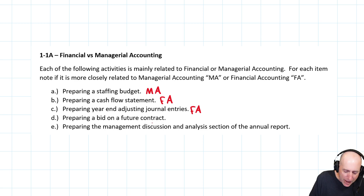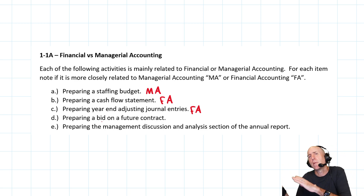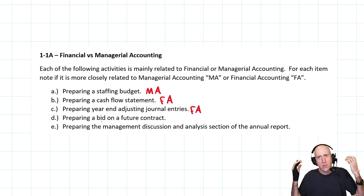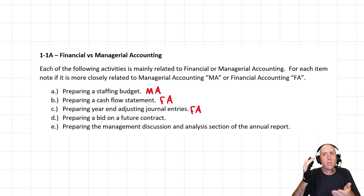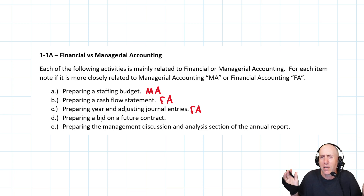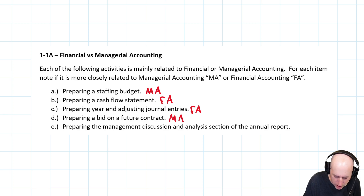Preparing a bid on a future contract. Bidding is about the future — something might happen, might not happen. Financial accounting is all about what already happened, reporting what happened. Bidding on something in the future requires accounting information, but it is about the future. This is a management accounting activity.